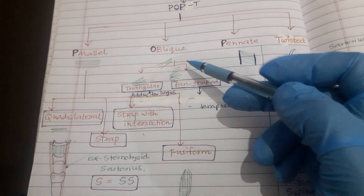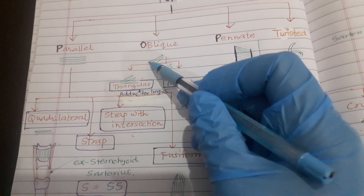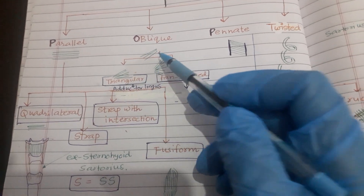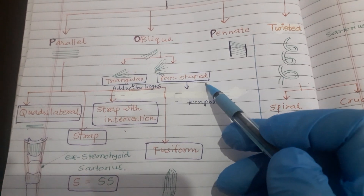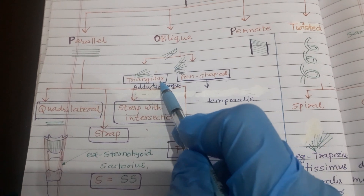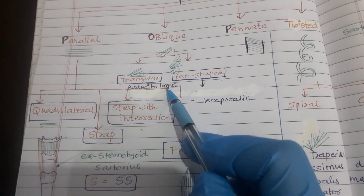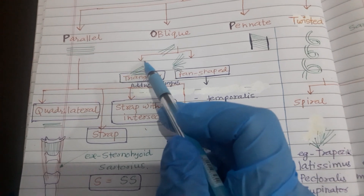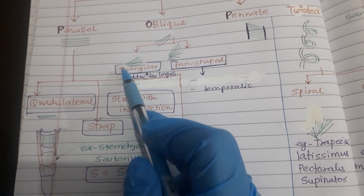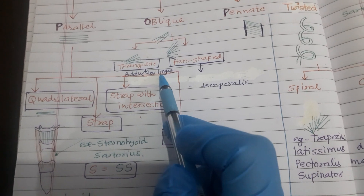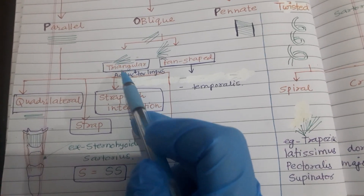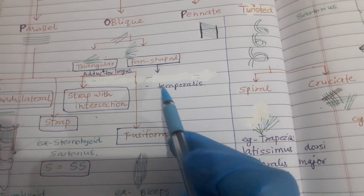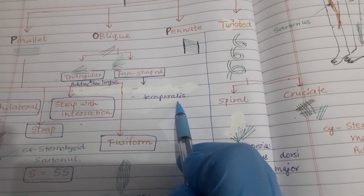Now coming to the second variety, oblique. Here the muscle fibers are not parallel; they are converging, taking the shape of a triangle — triangular. The example of the triangular variety is adductor longus. AL — adductor longus. It looks like an inclined slope which can be used as a slide for children. When we feel happy we take a slide, so triangular variety — adductor longus.